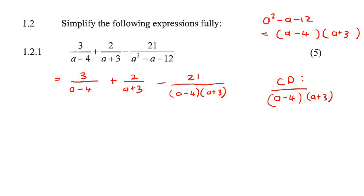So that means that if you look at this one, it still needs a plus three. So we're going to multiply this one with a plus three. And what you do at the bottom, you always do at the top. This one over here still needs to be multiplied with a minus four. What you do at the bottom, you always do at the top.